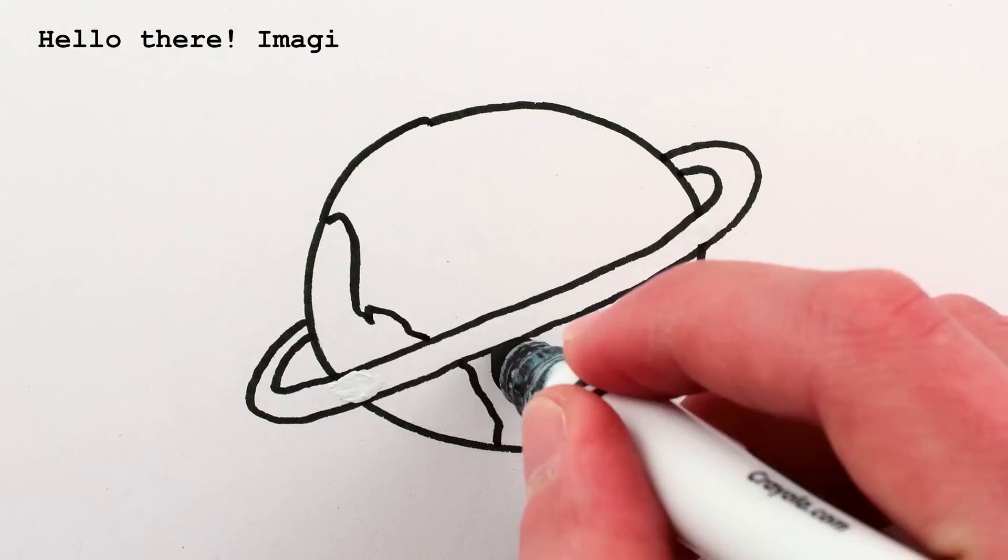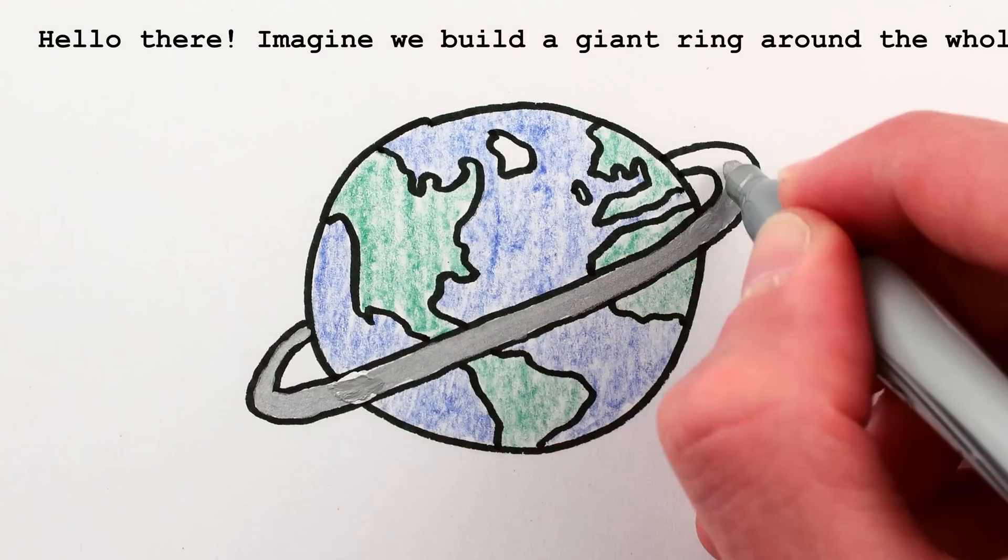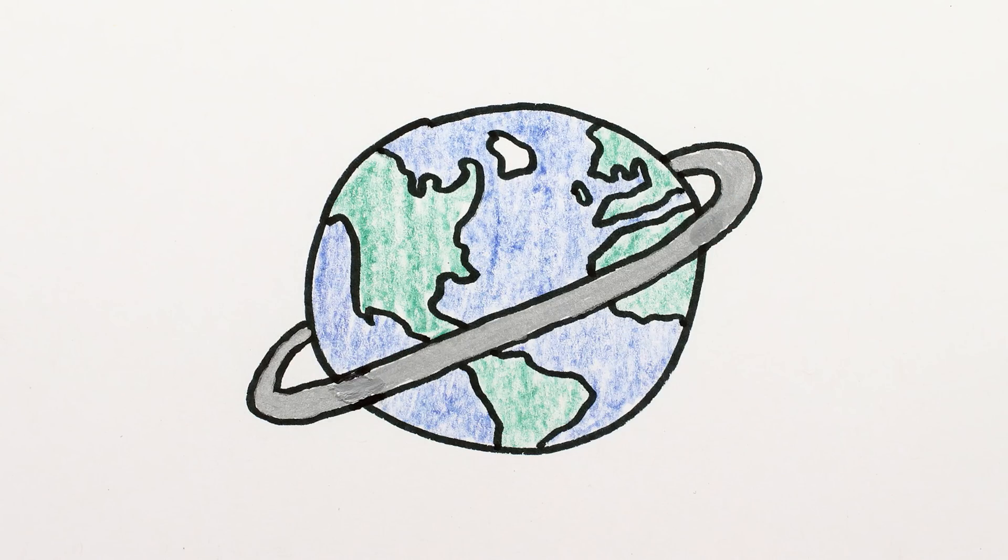I recently received this question via email. Hello there. Imagine we build a giant ring around the whole globe, perfectly round, no ups and downs.